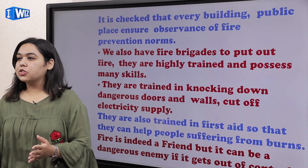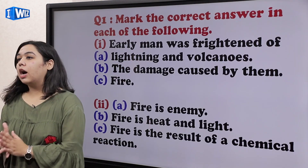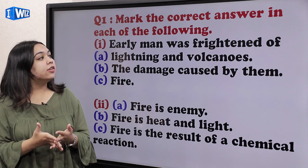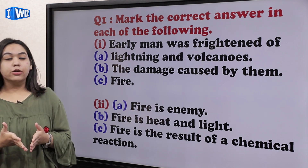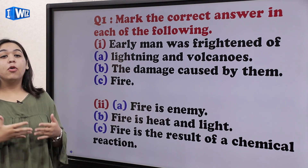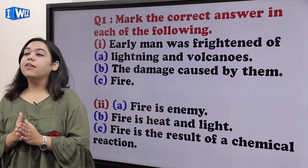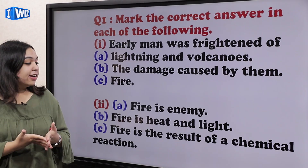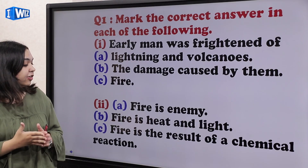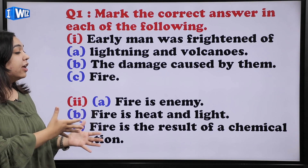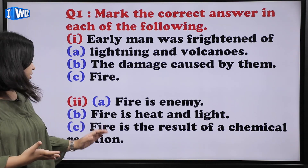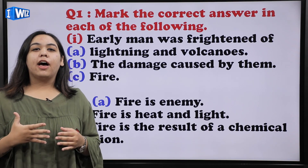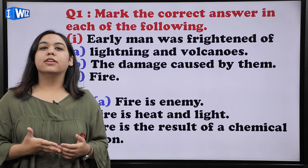Now let us discuss the question answers of this chapter. The first question: mark the correct answer — early man was frightened of lightning and volcanoes, the damage caused by them, or fire? The answer is that early man was frightened by fire, which we have already discussed. The next option asks: fire is an enemy, fire is heat and light, or fire is the result of a chemical reaction? The correct answer is that fire is the result of a chemical reaction, as we discussed during the text.